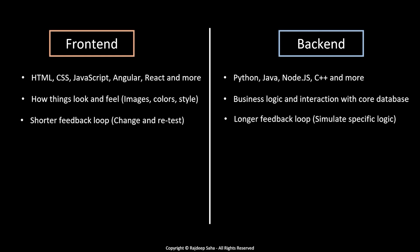Front-end has a shorter feedback loop — if you change your webpage written in HTML with CSS, you reload it and the changes are reflected, so you can change and retest a little bit easier. Back-end has a longer feedback loop since you cannot see and feel the back-end. If you change some business logic, you have to simulate that specific logic by calling the API with certain fields and conditions. In certain cases, you need to simulate high traffic to test error handling, so it is a little bit more difficult to test the back-end.